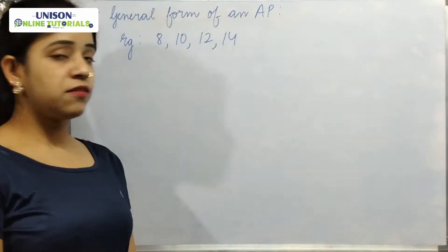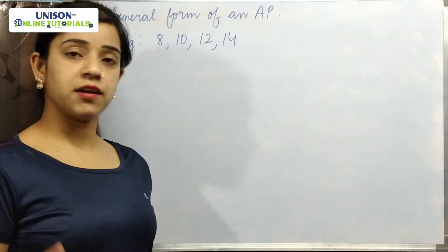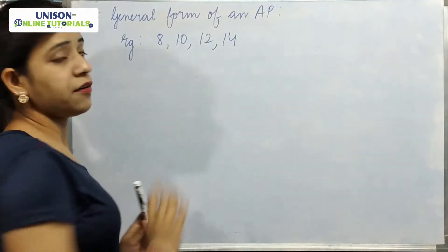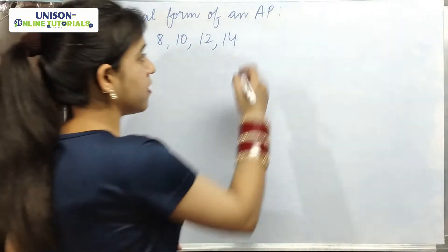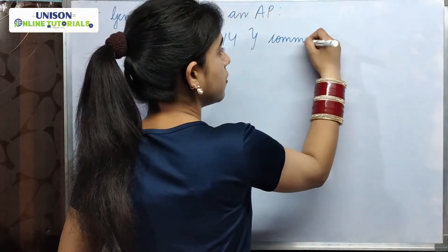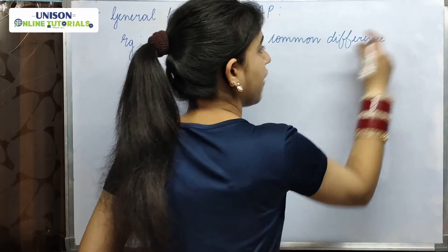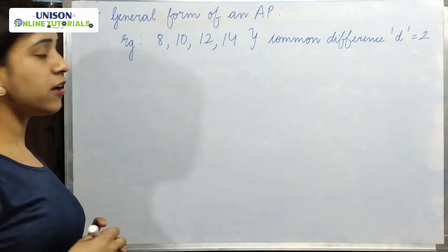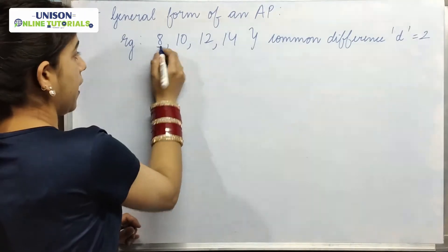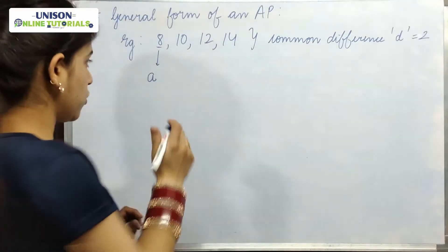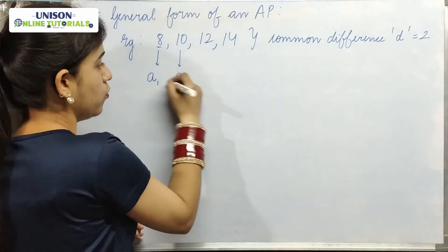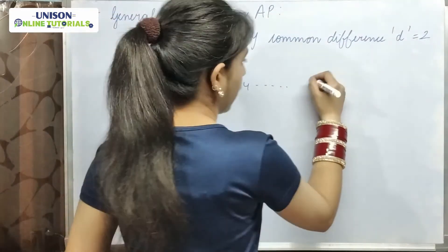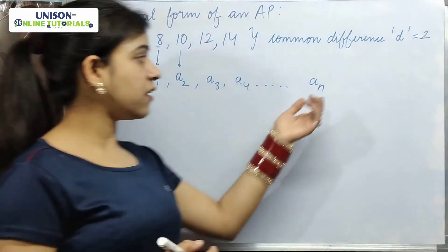As we have so many sequences of numbers that follow a certain pattern, we need to define the general form of an AP. Taking the example 8, 10, 12, 14, which has a common difference D of 2. In an AP, we denote the common difference by D. The first term is denoted by A or A1, the second term as A2, then A3, A4, and the last term as AN, since we don't know how many terms there are.